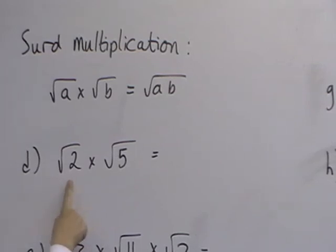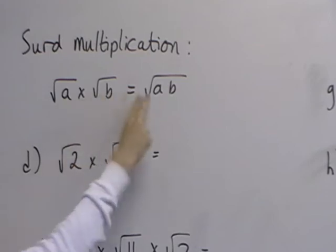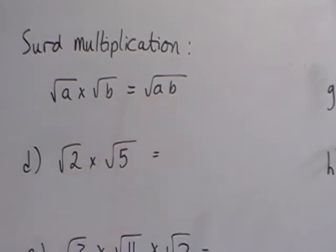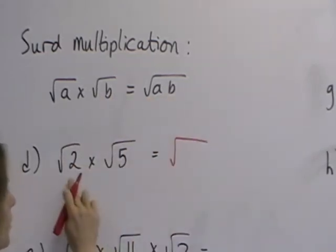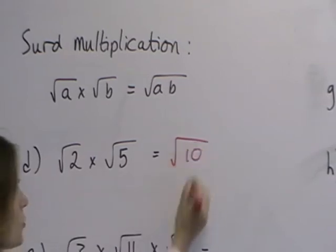So, if we have root 2 multiplied by root 5, then we simply take those numbers and we multiply them together. So that becomes the square root of 2 times 5, which is just root 10.